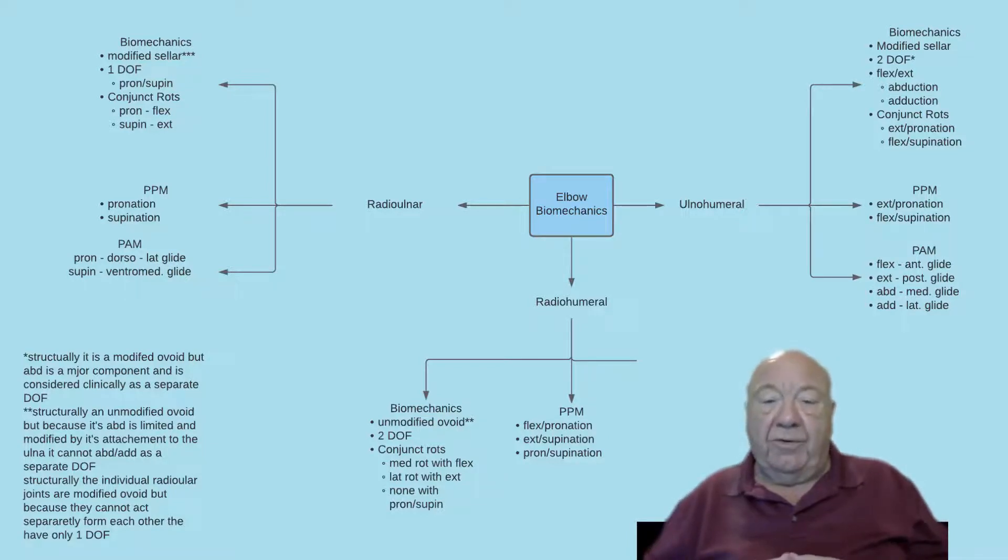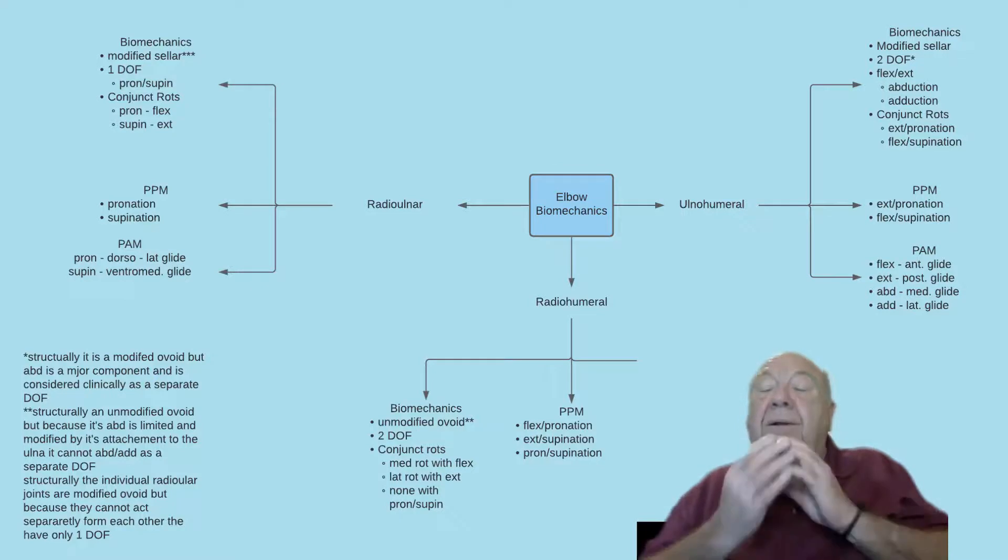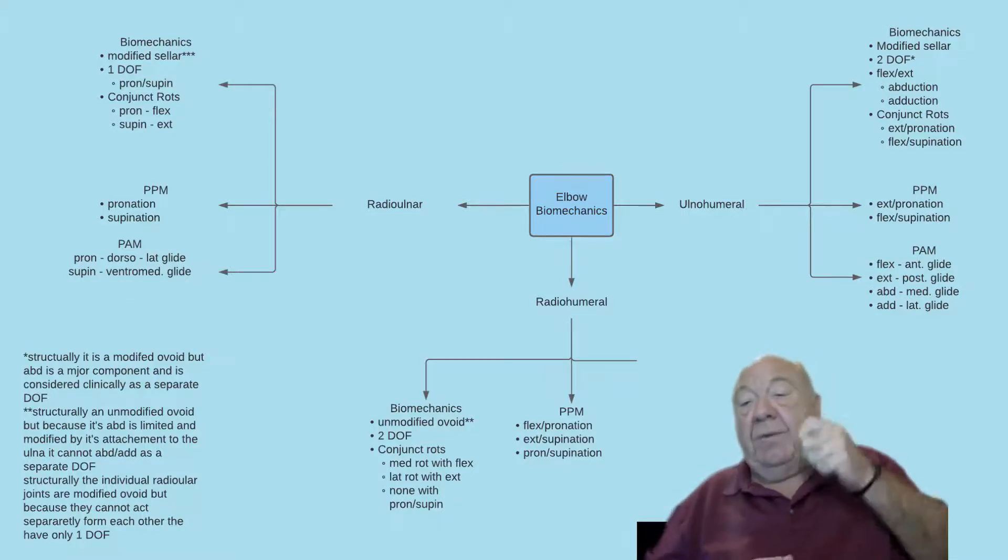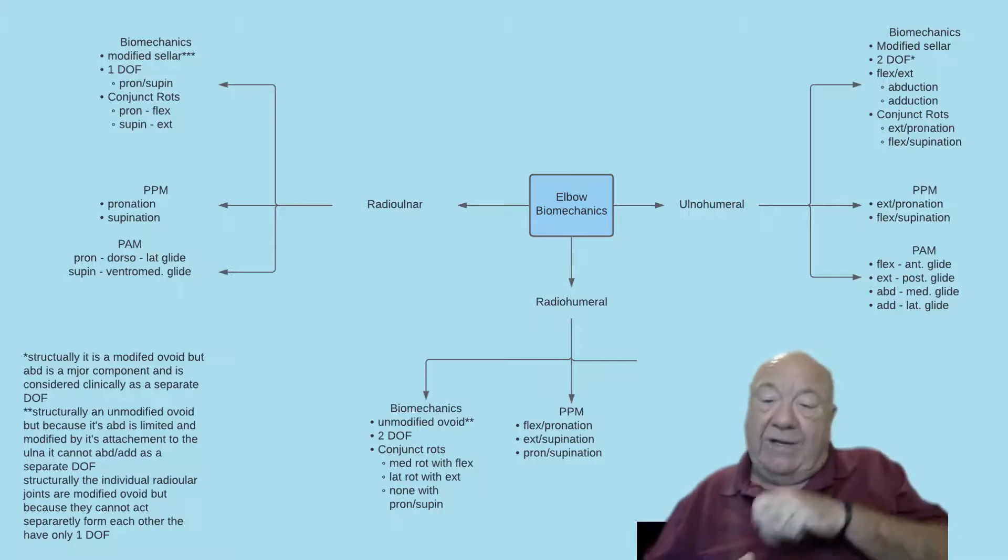The passive physiological movements for this joint then is going to be flexion-pronation, extension-supination, and the glides will be superior, moving the radius superiorly along the capitellum for flexion, and inferiorly for extension. And the glides for pronation-supination is distraction.